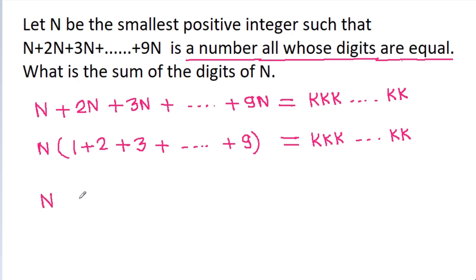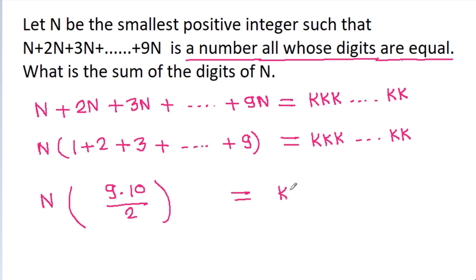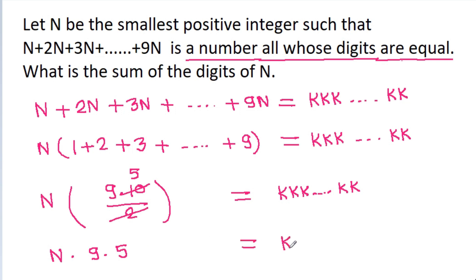The sum of natural numbers from 1 to 9 is 9 times 10 divided by 2, which equals 45. So n times 45 equals k, k, k, k.